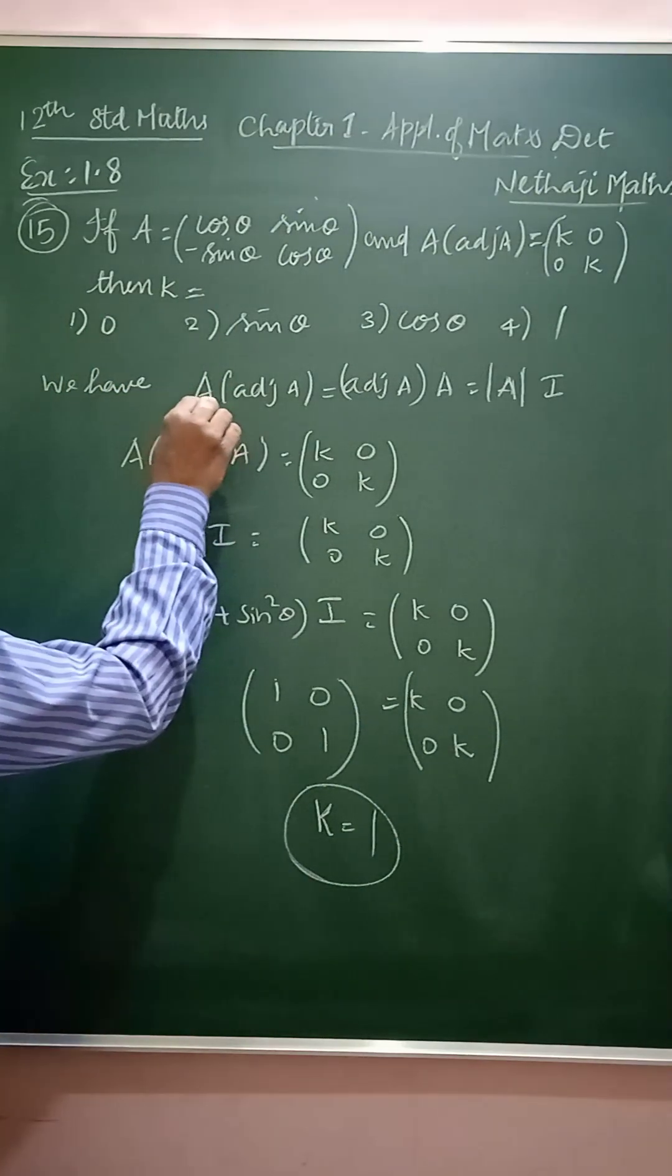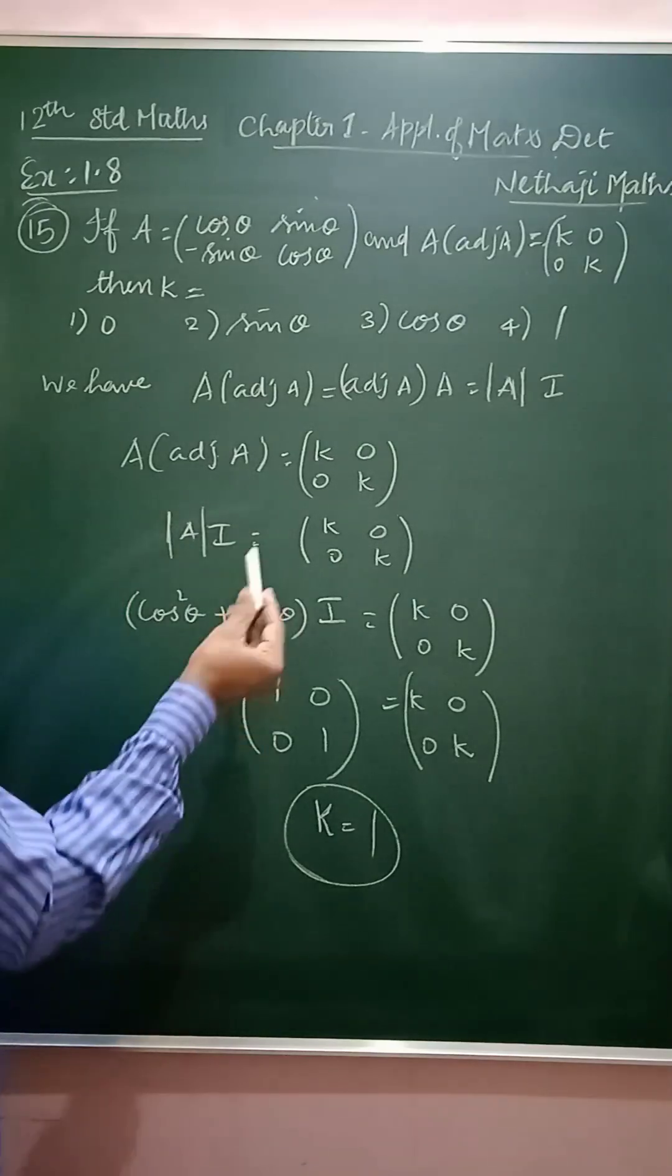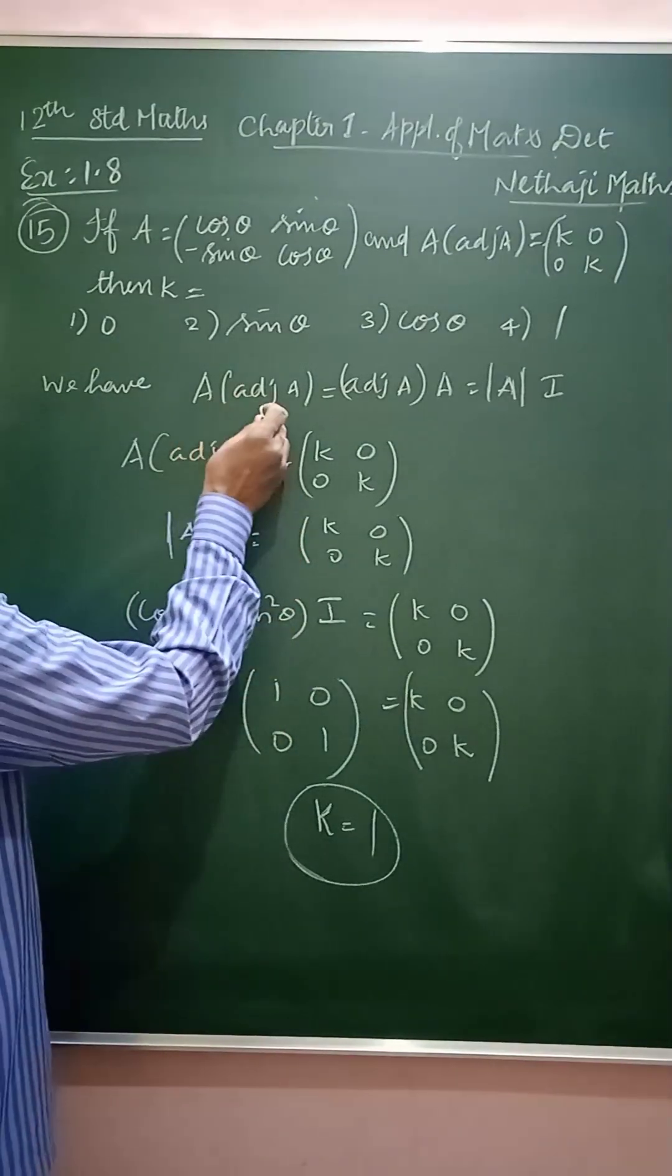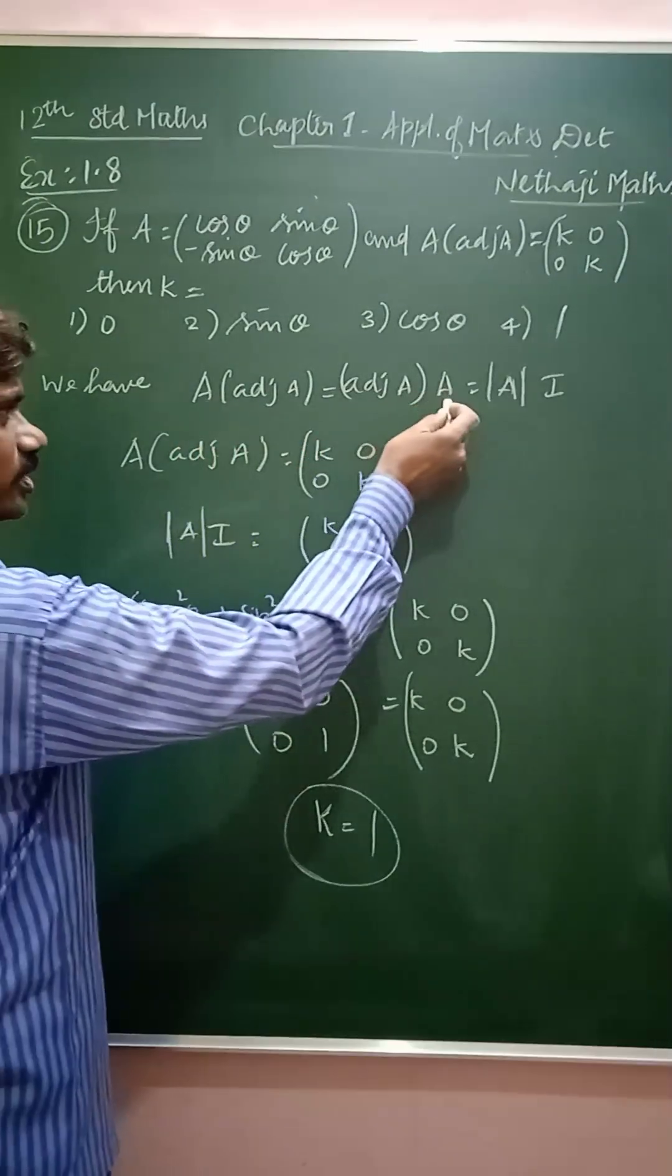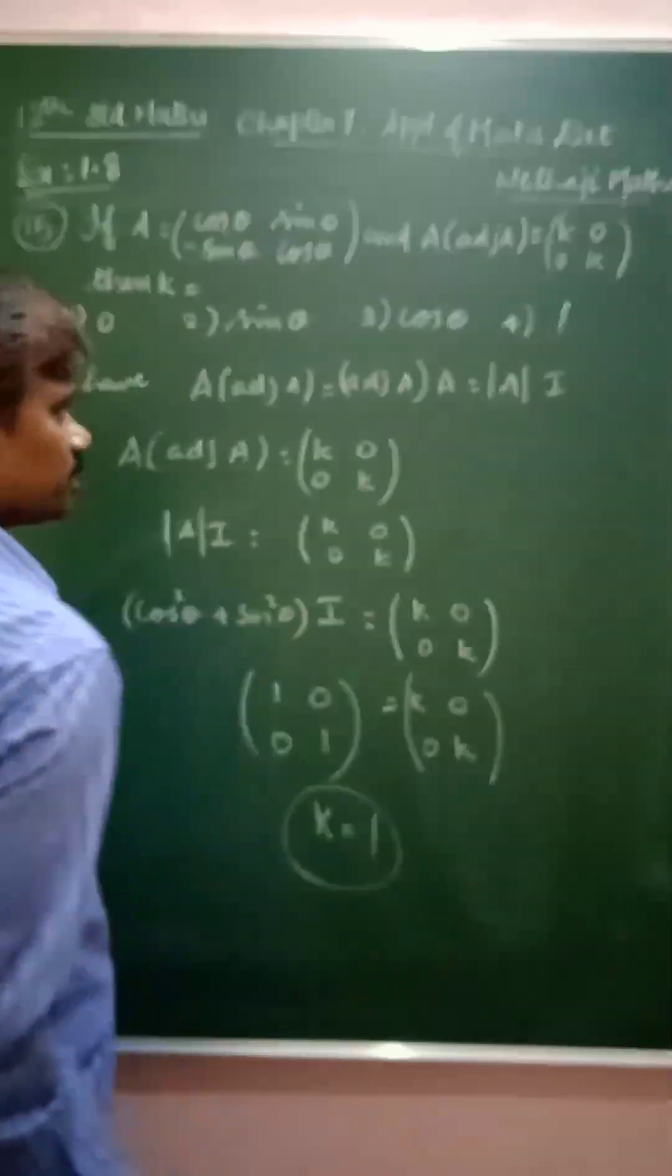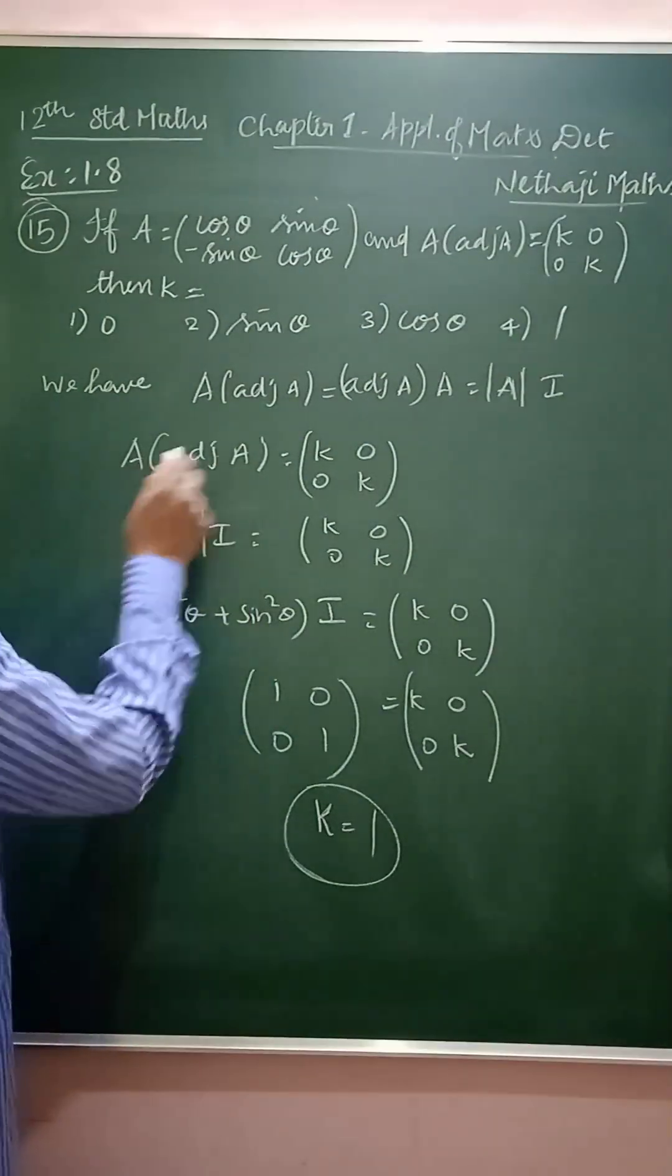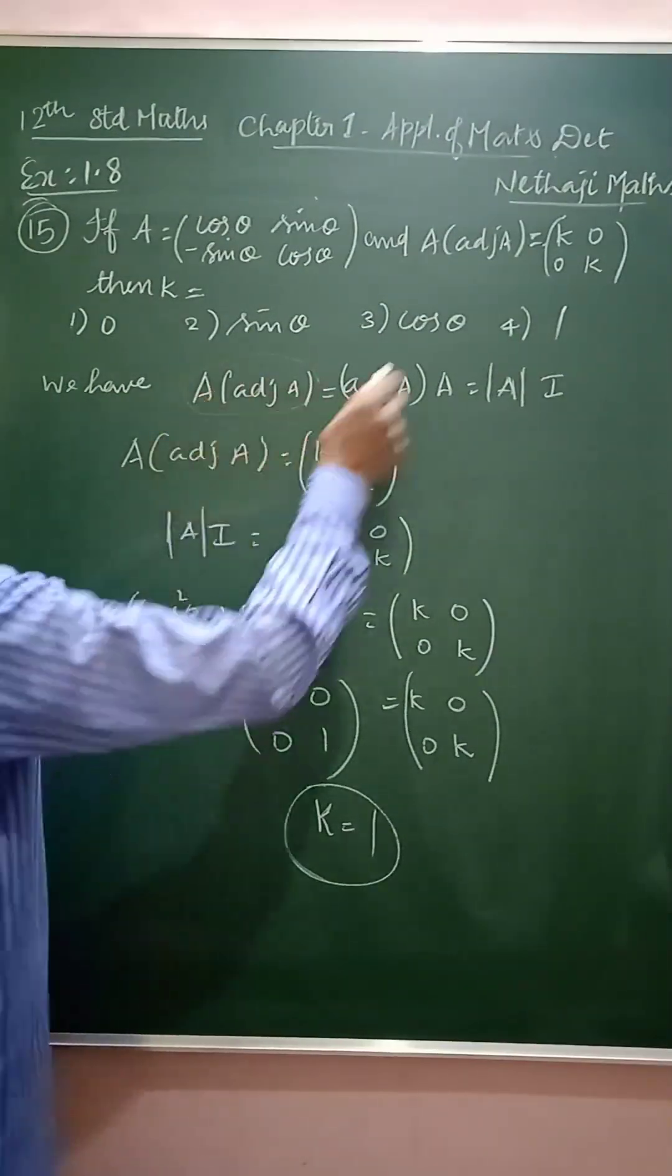We have the formula for A into adjoint of A. A into adjoint of A or adjoint of A into A is equal to determinant of A into I. So, I am going to use this formula here.